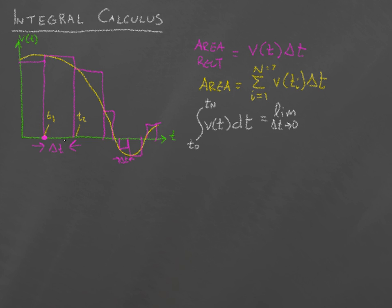So, in other words, I'm making the spacing go to zero. So, what does that mean for the number of rectangles? It means n is going to go to infinity.